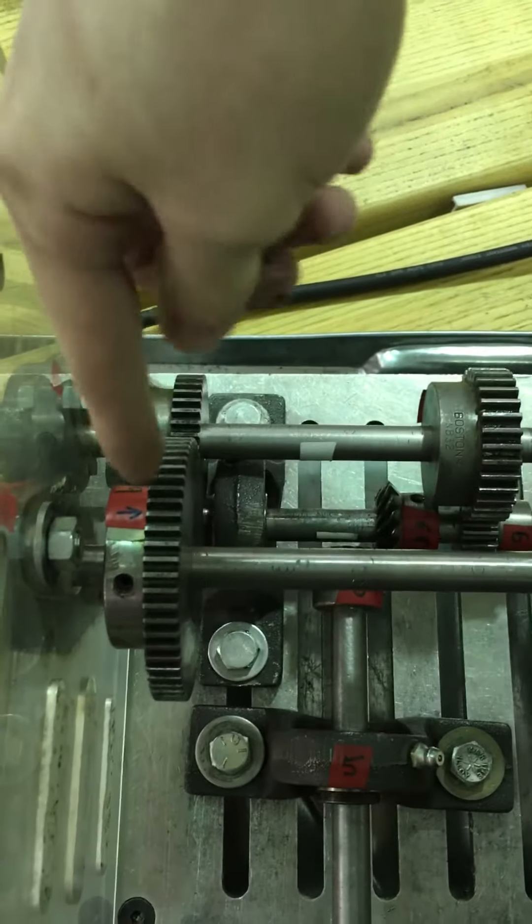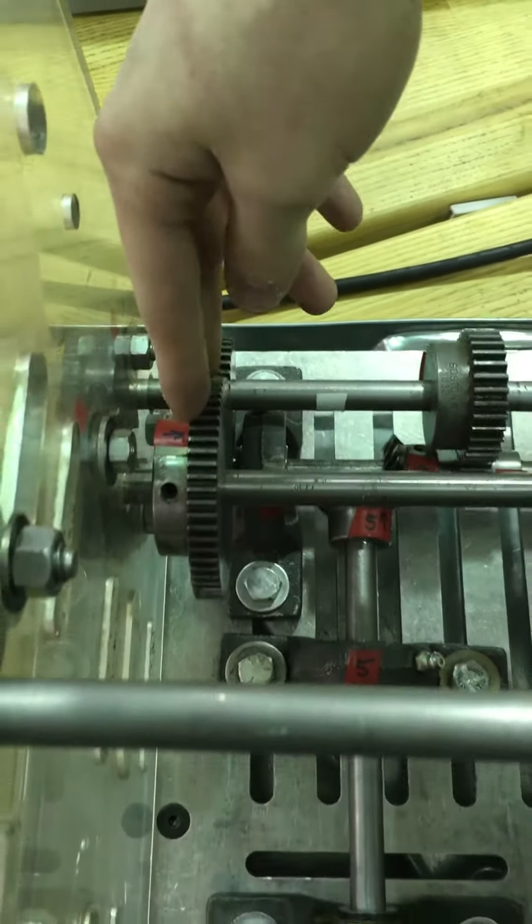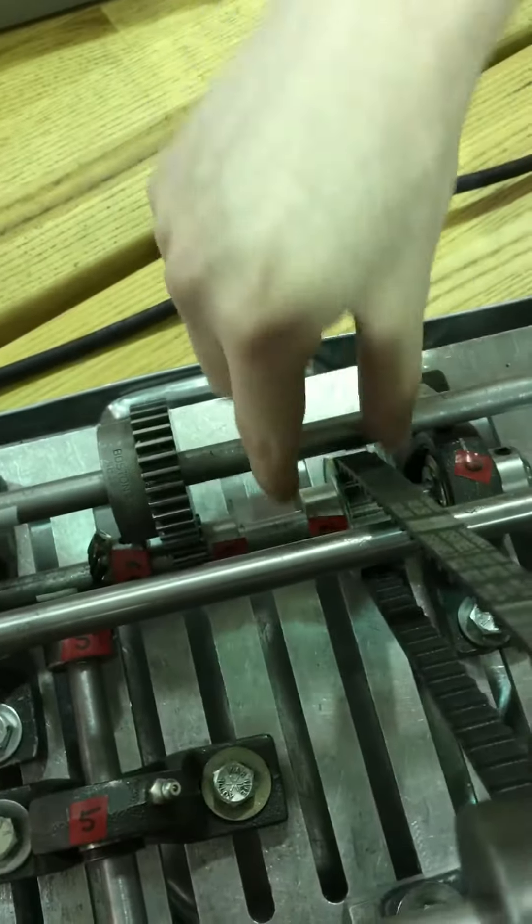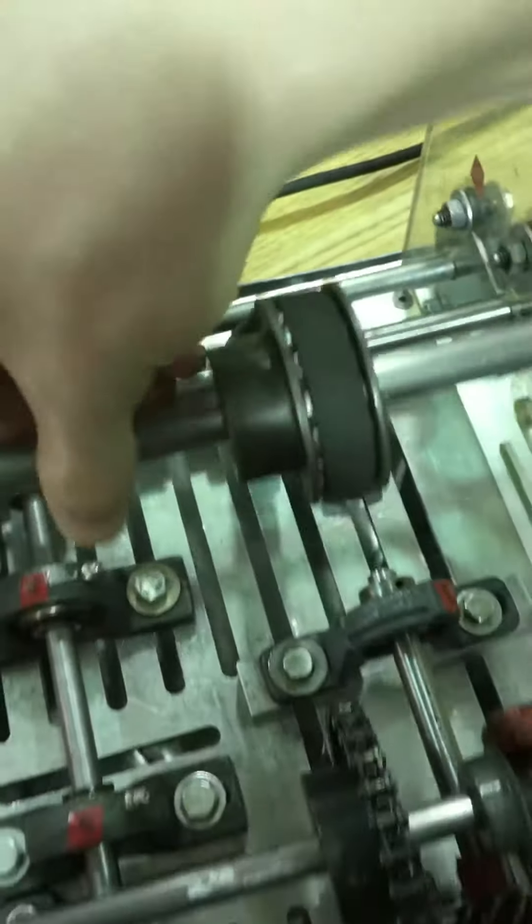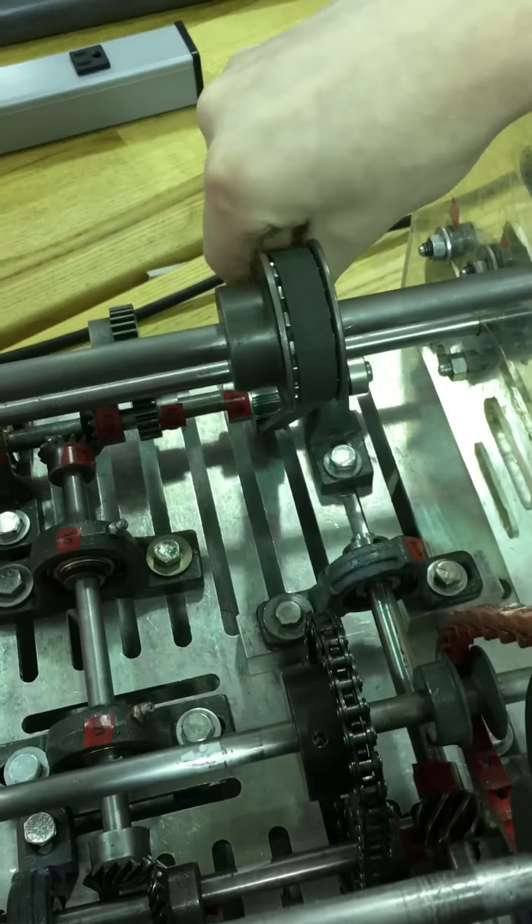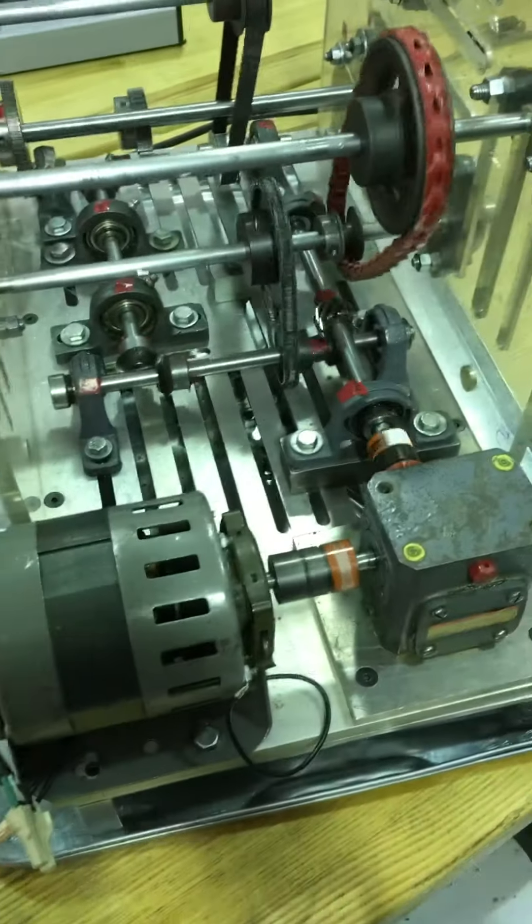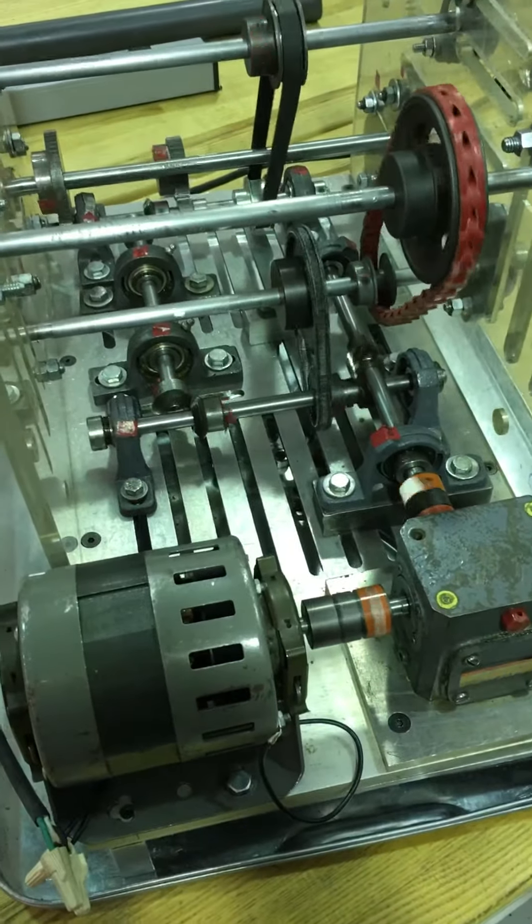Shaft eight drives shaft nine also through a pair of spur gears. Back to shaft six, shaft six drives shaft seven here through a timing belt. And that's our do-nothing machine. Better than before.